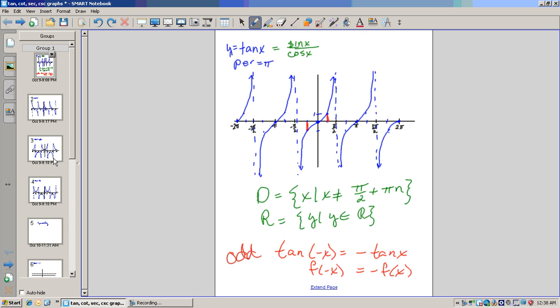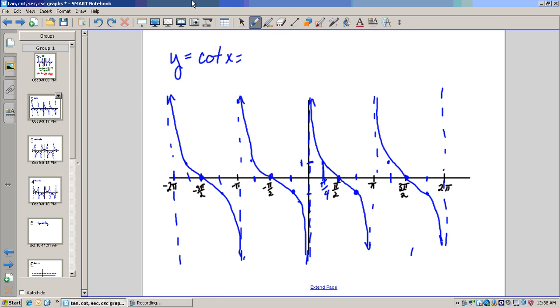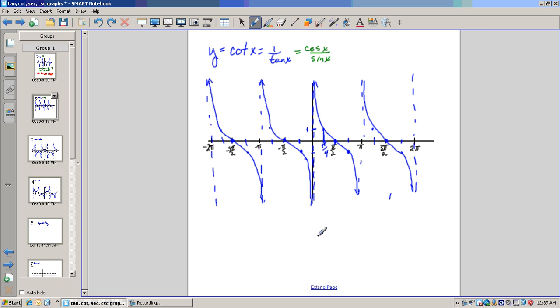Now let's go on to cotangent. Cotangent of x is one over tangent of x. We can also think of it as cosine of x over sine of x. Where tangent is zero, cotangent is undefined. So cotangent's asymptotes are multiples of pi. That means what is the domain of cotangent? The set of all x such that x is not equal to pi n, n times zero, n times one, n times negative one.